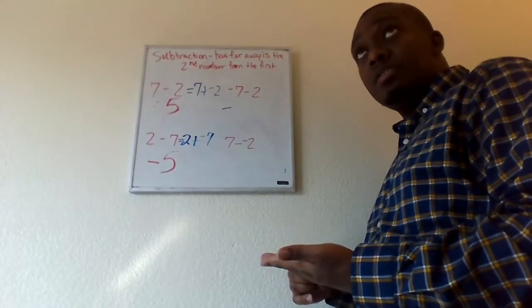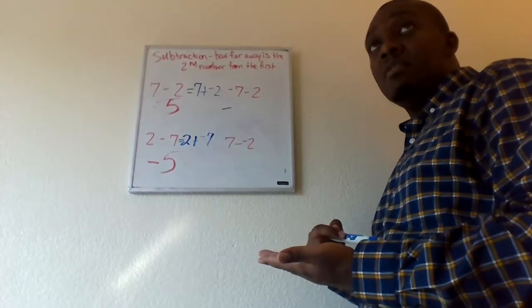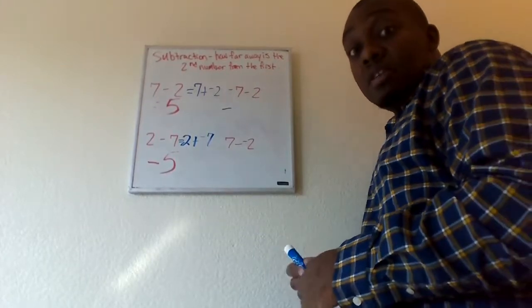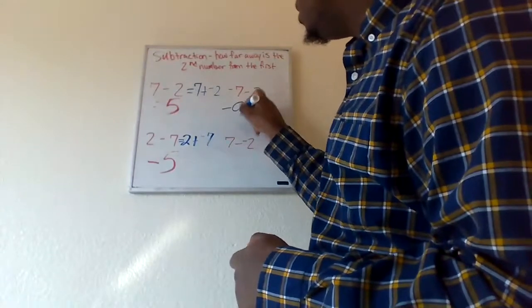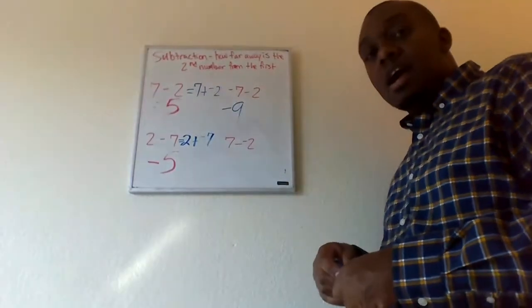Okay. Well, how far is two from negative seven? Well, to get from two to zero, that's two. To get from zero to negative seven, that's seven more. So, two plus seven would be a total of nine. Oh, nine. All right. Okay.